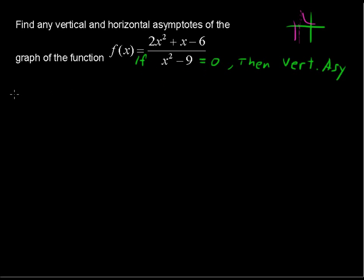Let's solve this equation, x squared minus 9 equals 0. Add 9 to each side and you get x squared equals 9, and take the square root of each side to solve for x. When you take the square root, you have to say plus or minus.